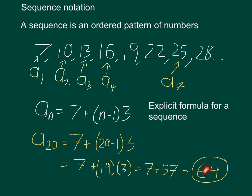So I've basically used this explicit formula to find the 20th thing in this sequence. If I listed out 20 terms here, the 20th one would be 64.